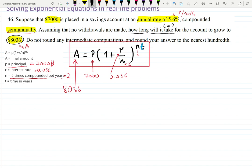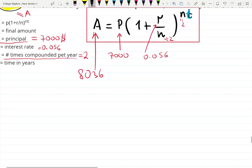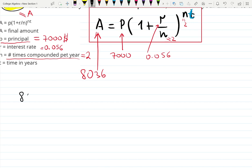What is the only thing we don't know? t. So we need to solve for t. That's an exponential equation. Let's do it. 8036 equals seven thousand dollars invested times one plus the rate 0.056 over how many times per year compounded, that's twice per year, 2, raised to the twice per year times t.